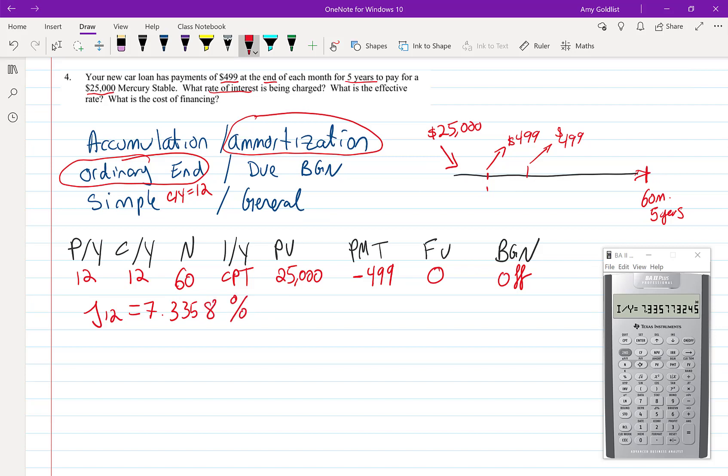Now there's a few things we can do. I could take this interest rate and store it and then use that interest conversion worksheet that we talked about in the last section. So the nominal, let's put recall 1, enter. Now I go down, I'm going to find my effective rate, but I need my CY to be 12. I'm going to compute that and I find out that I have 7.5875%.